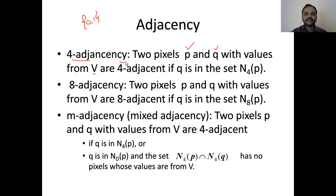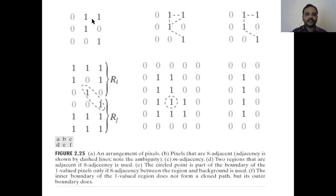Two pixels p and q are four-adjacent if q is in the set of four-neighbors of p. So we should first find pixel p, its value, and its four neighbors, and if pixel q is in the four-neighbors of p with the same value, then p and q are said to be four-adjacent. Let's see one example: if I consider this particular pixel to be p and its value is from the set V = {0, 1}, so it is 1.